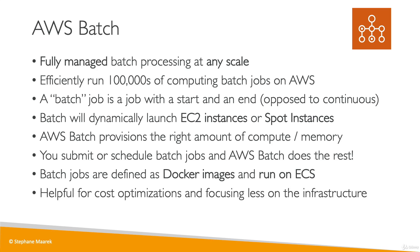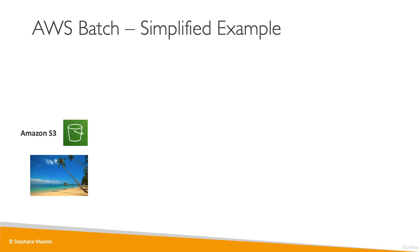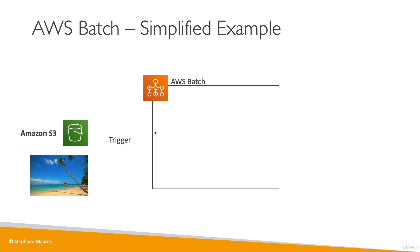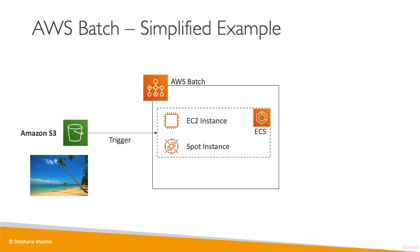Because Batch automatically scales the right number of EC2 instances or Spot instances to do these jobs, you get lots of cost optimizations and you focus a lot less on the infrastructure — you just focus on your batch jobs. To illustrate, say we wanted to process images submitted by users into Amazon S3 in a Batch way. An image will be put into Amazon S3 and this would trigger a Batch job. Batch will automatically have an ECS cluster made of EC2 instances or Spot instances, and Batch would make sure you have the right amount of instances to accommodate the load of Batch jobs in the Batch queue.